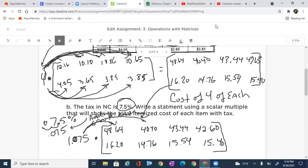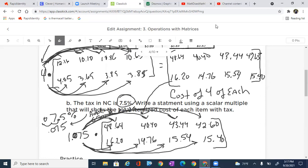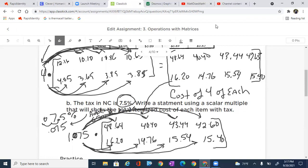I'm going to leave it up to you. You're going to go into Desmos or your calculator. And now you're going to multiply everything by 1.075 to increase each one of those items by the tax rate of 7.5% in North Carolina.